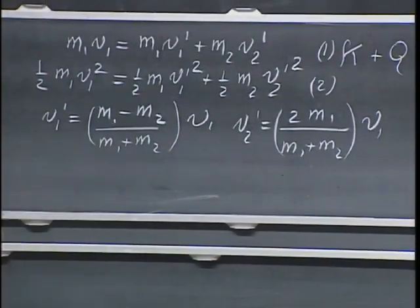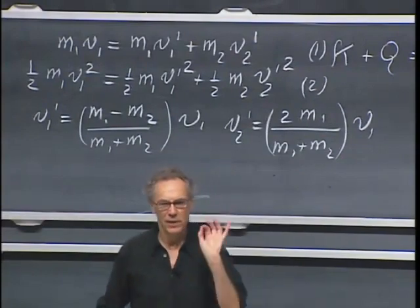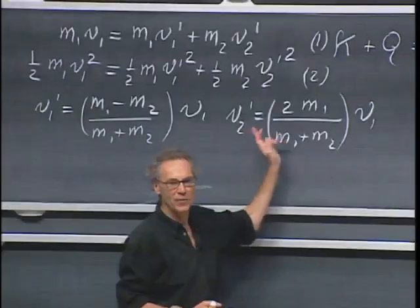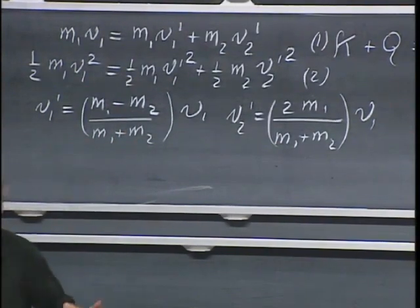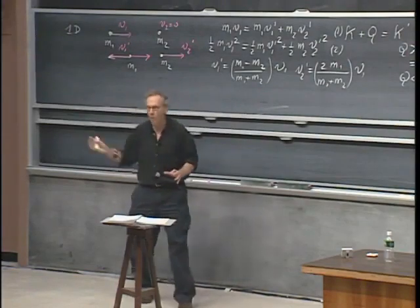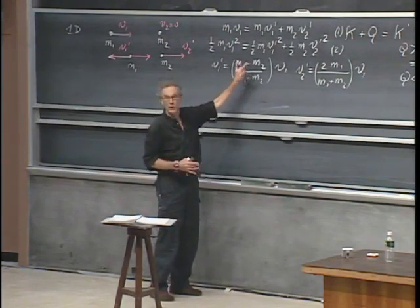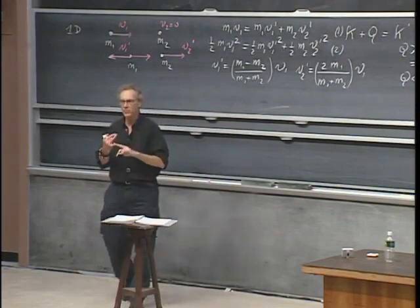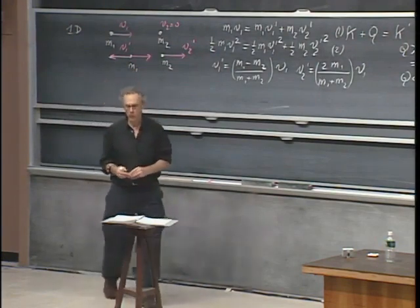You can see right away that v2 prime is always in the same direction as v1 — completely obvious, since the second object was standing still. V1 prime, however, can have a sign reversal. If you bounce a ping-pong ball off a billiard ball, the ping-pong ball comes back and v1 prime is negative. If you plow a billiard ball onto a ping-pong ball, it goes forward. This result holds under three conditions: kinetic energy is conserved (Q = 0), momentum is conserved, and v2 before the collision equals zero.